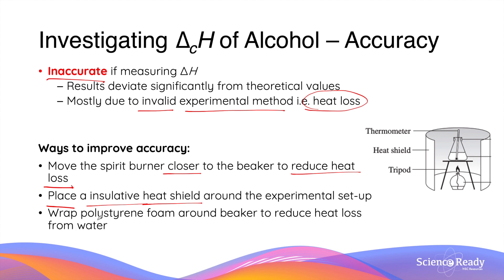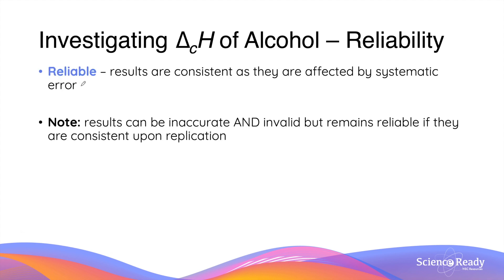Thirdly, you can wrap polystyrene foam around the beaker to reduce heat loss from the water. Despite the fact that this experiment can produce invalid and inaccurate results, the results are typically reliable, because if you perform the experiment consistently without changing the method, you will produce numbers that are fairly similar and consistent, and therefore reliable.